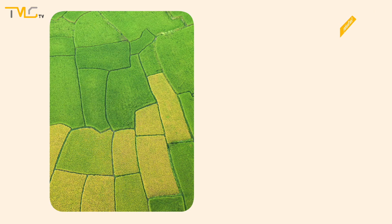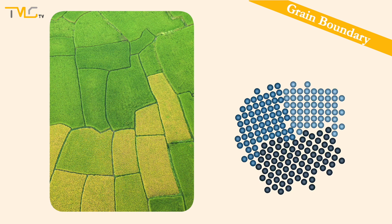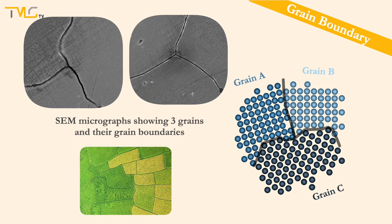Another type of interfacial defect is grain boundaries, which separate the parts of the materials having the same crystal structure but different crystal orientations. Each of these neighboring crystals are called grains. As there is an orientation difference between these crystals, the observed atom mismatch leads to the occurrence of free bonds at grain boundaries, making grain boundary regions high energy zones.